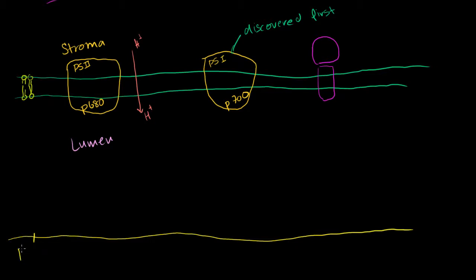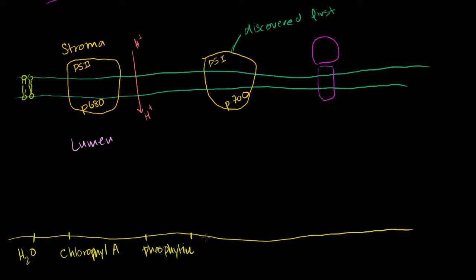The electron can be a part of H2O, or it could be a part of chlorophyll A. It could be a part of — I'll talk more about this in a bit — pheophytin. And then you have all the molecules or complexes it can become a part of. So let me write: plastoquinone.